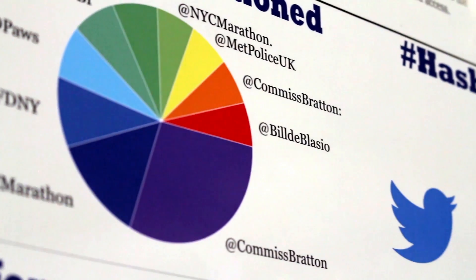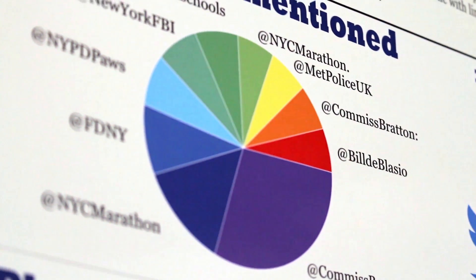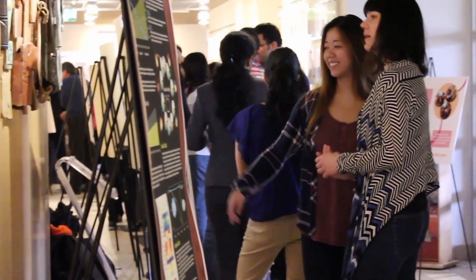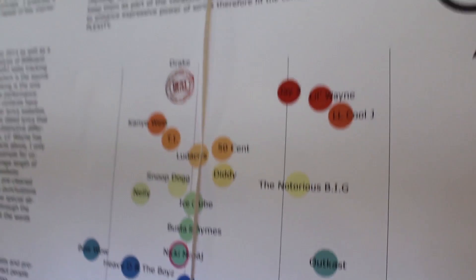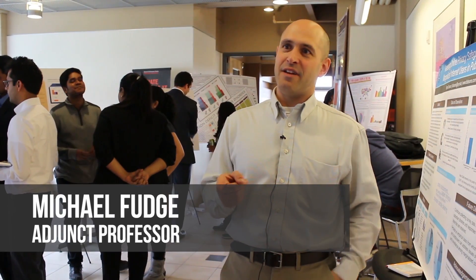719 is an information visualization class. It's an exciting class because students come in sometimes with no understanding of how to visualize data or how to use a programming language like R, and they leave with some hands-on experience using these tools along with Adobe Illustrator to create a visual representation that tells a story about data.